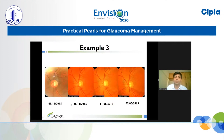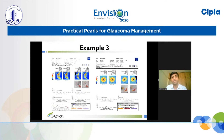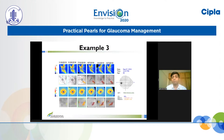In this example, a normal-looking disc in 2015 developed an inferior rim excavation in 2016, subsequently a disc hemorrhage and an RNFL defect which kept progressing — correlated well with the RNFL and GCC maps. When putting everything together, the GC-IPL maps show progressive thinning in 2016, the RNFL maps show progressive thinning in 2018, and the visual fields show progression only in 2019 and 2020 — these were 24-2 fields.